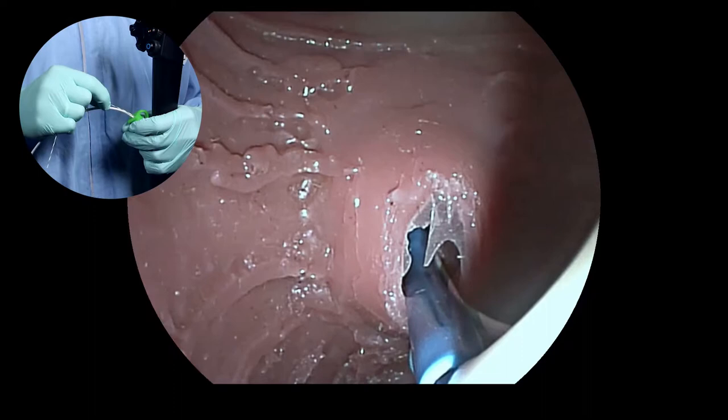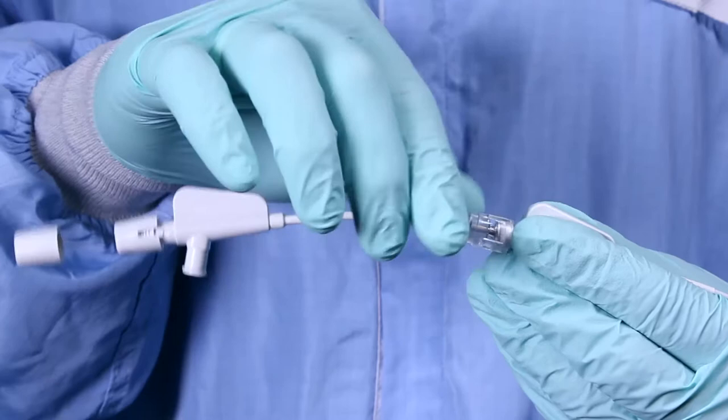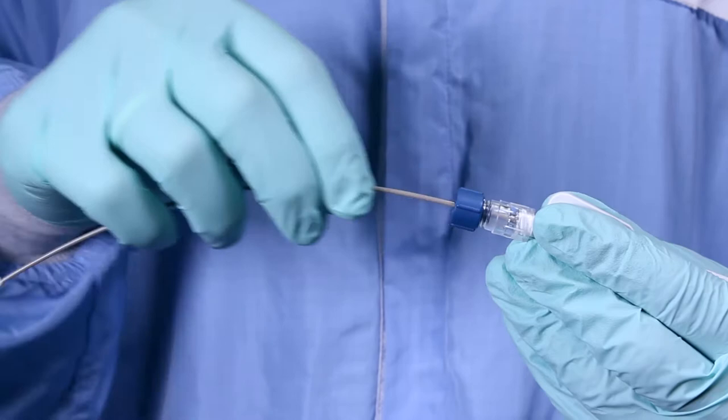To release the bile duct prosthesis, remove the guide wire from the guide catheter and open the blue squeeze connector. Release the bile duct prosthesis by removing the internal guide catheter from the pusher.